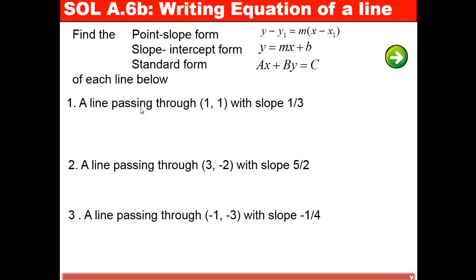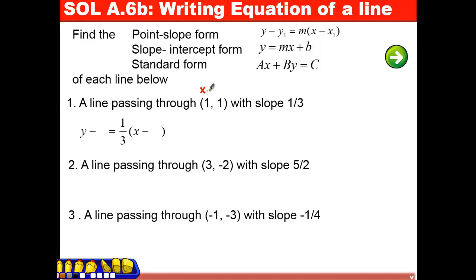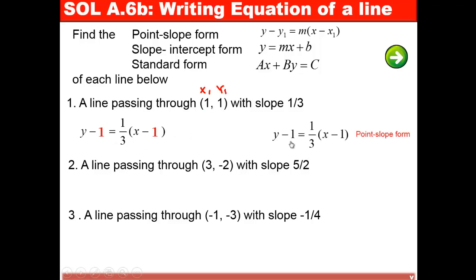First, I have a line passing through point (1, 1) with slope 1/3. To write the point-slope form, I copy the point-slope formula and replace m by 1/3. I label x₁ and y₁ from the point: y₁ goes here and x₁ goes here. Replacing y₁ by 1 and x₁ by 1, I get y minus 1 equals 1/3 times x minus 1. That is the point-slope form.